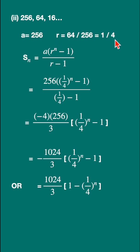Common ratio is 1 upon 4. Write down the formula, substitute here. So this is minus 3 upon 4. The 4 will go to the numerator.